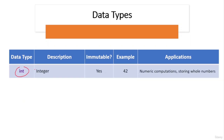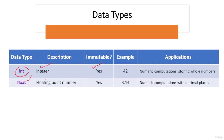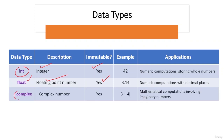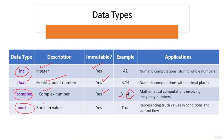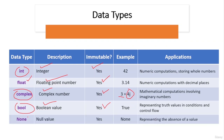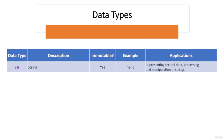Python has several built-in data types: 'int' represents integers (immutable, used for whole number computations); 'float' represents floating-point numbers (immutable, for computations with decimal places); 'complex' represents complex numbers with real and imaginary parts (immutable, for mathematical computations involving imaginary numbers); 'bool' represents boolean values true or false (immutable, used in conditions and control flows); 'None' represents a null value (immutable, used to represent the absence of a value); 'str' represents strings (immutable, for textual data processing and manipulation).